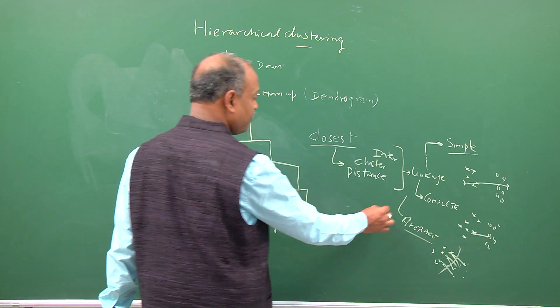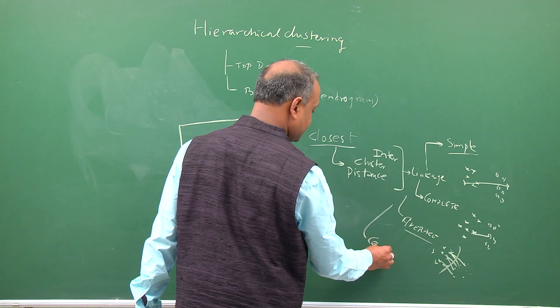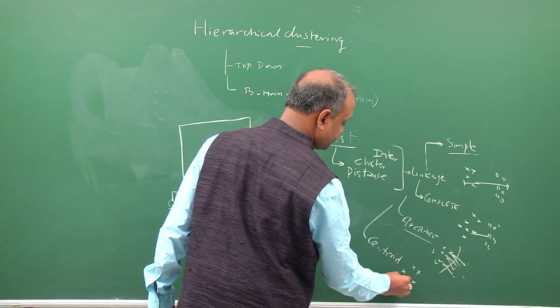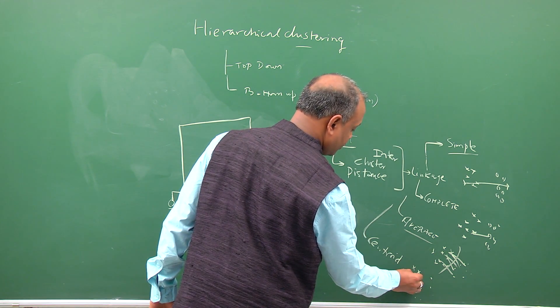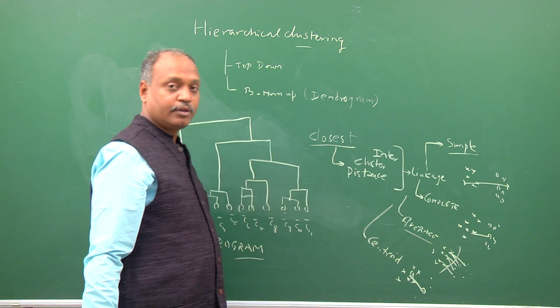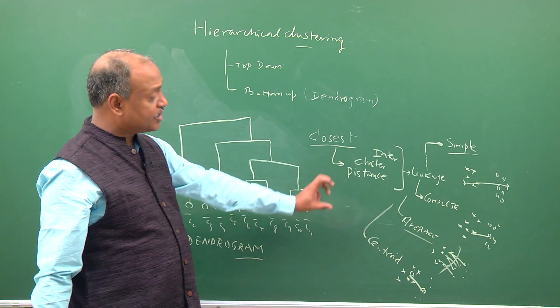So this is the centroid, this is the centroid, I'll just take the distance between these two. So depending upon the inter-cluster distance, the dendrogram changes.